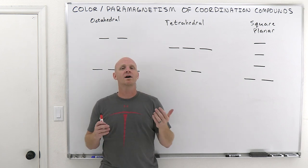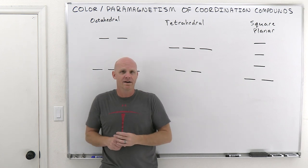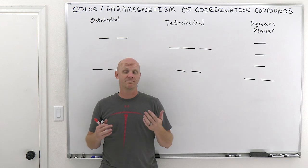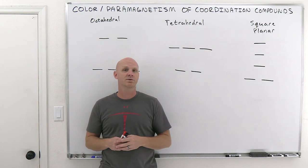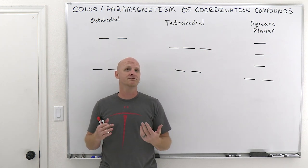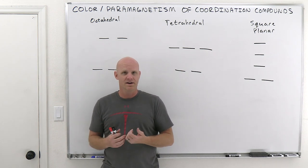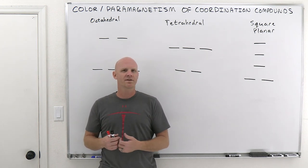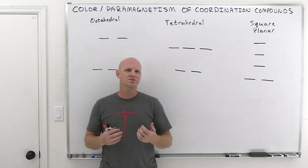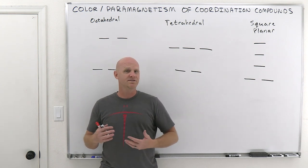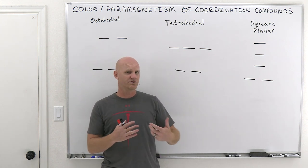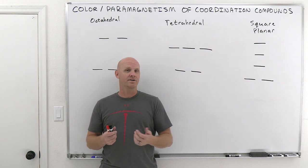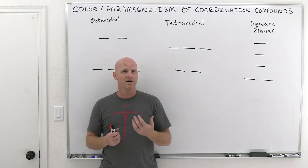Let's start with color. It turns out that complex ions and coordination compounds are very often associated with very bright, vivid colors. Not all of them, but the vast majority that you come across — usually we associate these transition metals and transition metal complexes with these bright colors, and there's a very good reason for that.